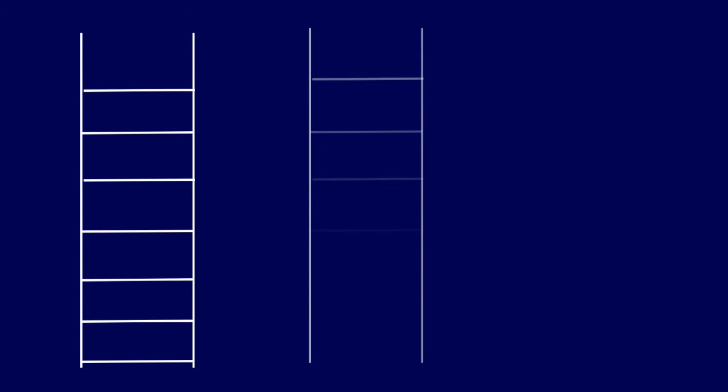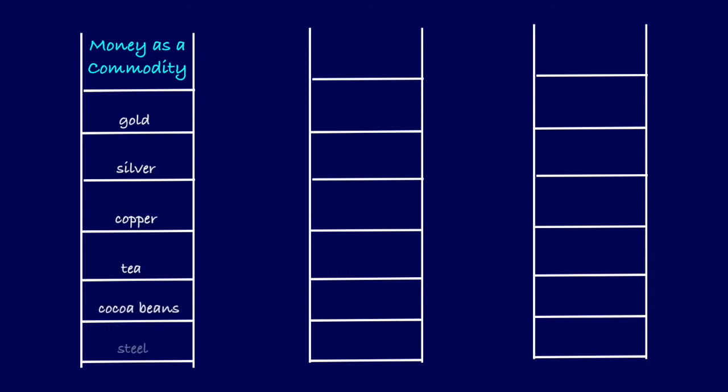However, unlike a mind chart, this time we start the process with categories associated with money, not just money as a broad subject. We then compile words that pertain to each category.